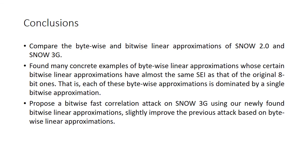In this paper, we compare the bytewise and bitwise linear approximations of SNOW 2 and SNOW 3G, and find many concrete examples of bytewise linear approximations whose certain bitwise linear approximations have almost the same SEI as that of the original 8-bit ones. That is, each of these bytewise approximations is dominated by a single bitwise approximation. Based on our newly found bitwise masks, we propose a bitwise fast correlation attack on SNOW 3G, slightly improving the previous attack based on bytewise linear approximations. That's all of my presentation. Thanks for listening.